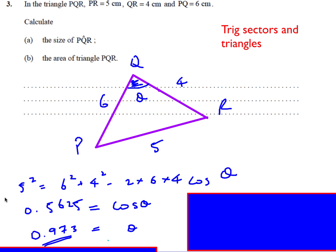I'm going to use the cosine rule. I've got the angle and the side opposite, so: 5² = 6² + 4² − 2×6×4×cosθ. Rearranging and simplifying gives 0.5625 = cosθ. Taking inverse cosine — working in radians — I get θ = 0.973 radians to three significant figures.